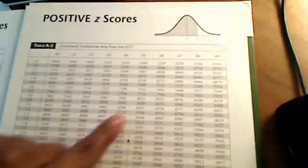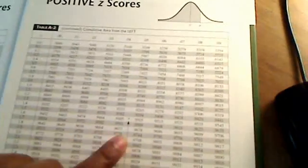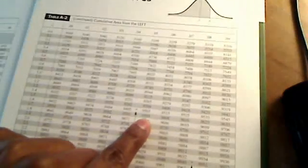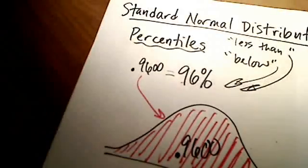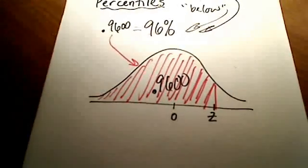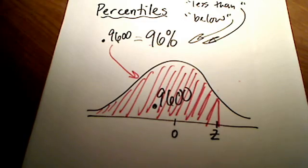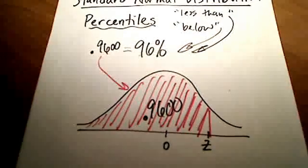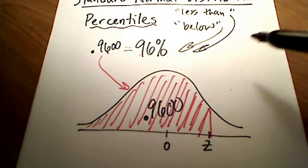So I'm looking up in this area here, I'm looking up for a .96, at least the thing that comes closest to it. And I know you can't read that, that my finger is pointing to, but it looks like the closest number that I get to .96 is .9599.